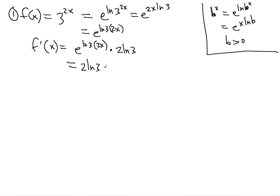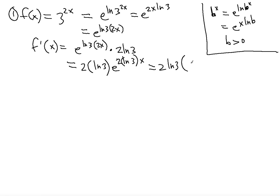So let's see what that simplifies to: 2 ln 3 times e to the 2 ln 3 x. And we can put it in standard form, because e to the ln 3 times 2x is equal to 3 to the 2x, so we can write it as 2 ln 3 times 3 to the 2x. We're just substituting back to what it was before, so we can take the derivative easily.